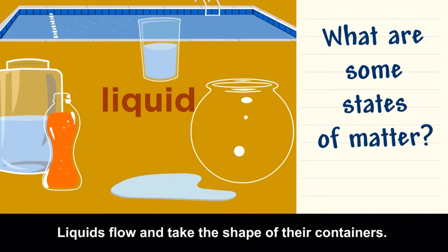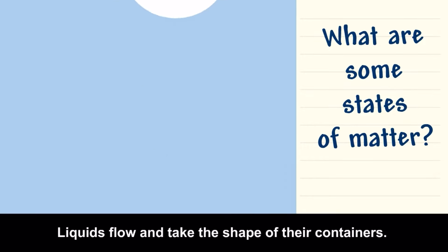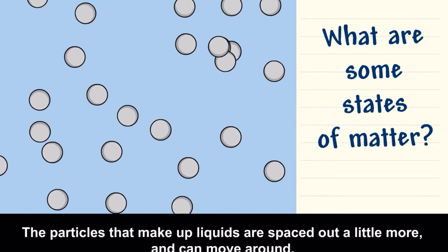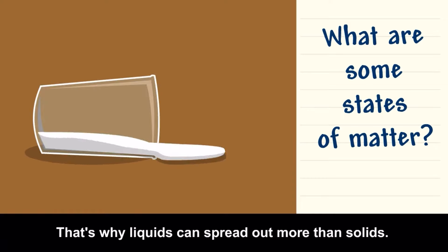Liquids flow and take the shape of their containers. The particles that make up liquids are spaced out a little more and can move around. That's why liquids can spread out more than solids.